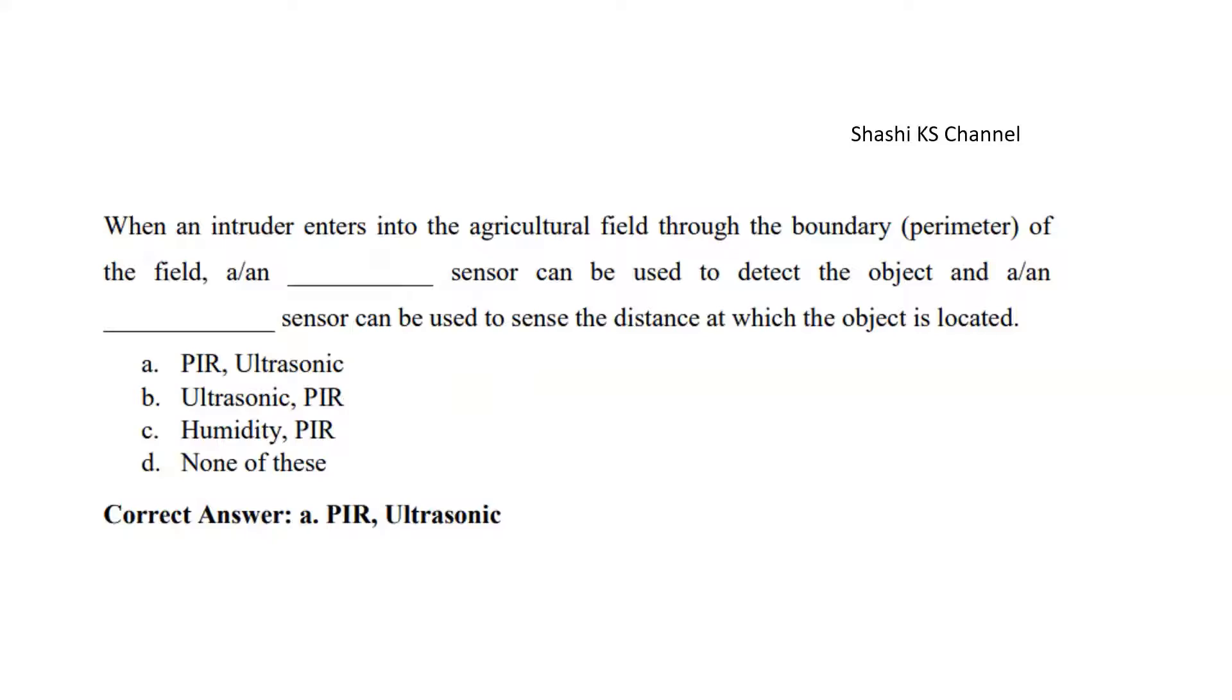The next question is when an intruder enters into the agricultural field through the boundary of the field, a dash sensor is used to detect the object and a dash sensor is used to sense the distance at which the object is located. The right answer to this is a PIR sensor is used to detect it's used for object detection and an ultrasonic sensor is used to sense the distance at which the object is located.